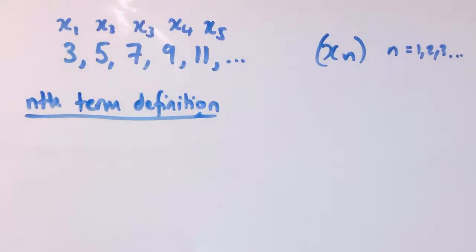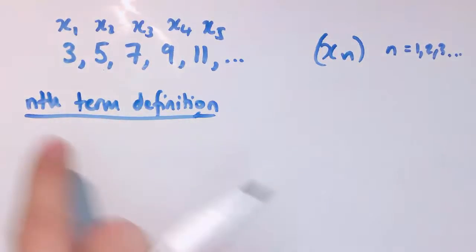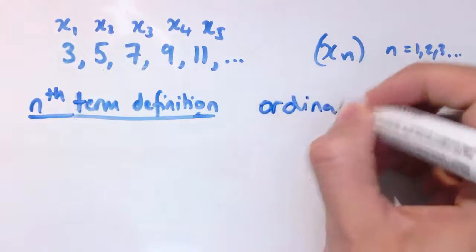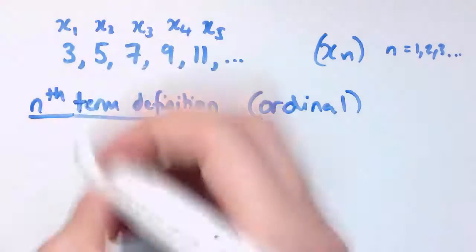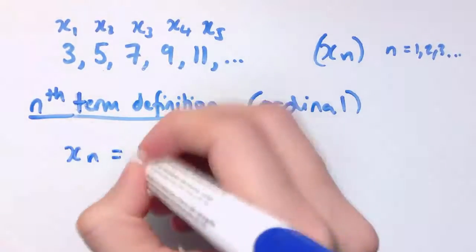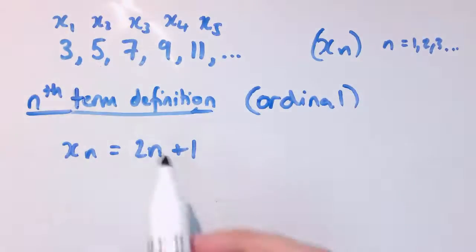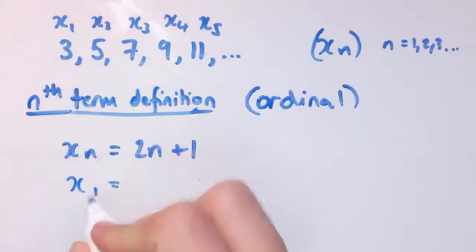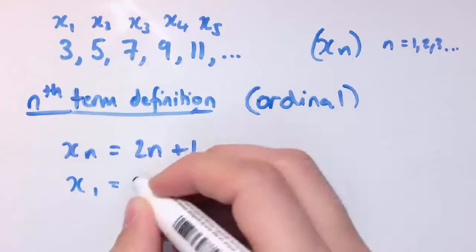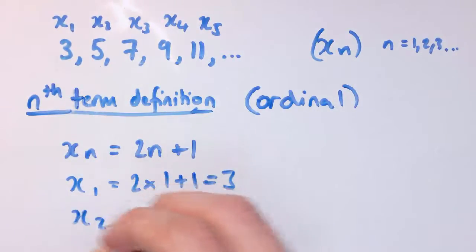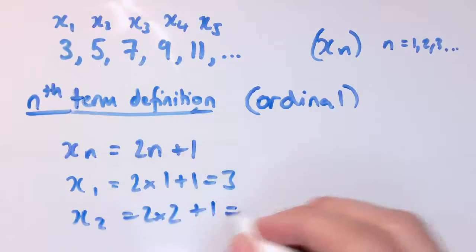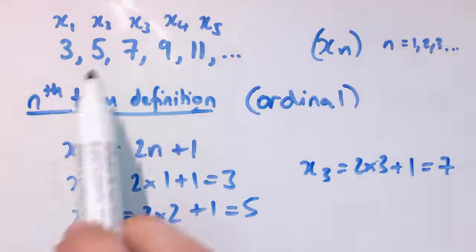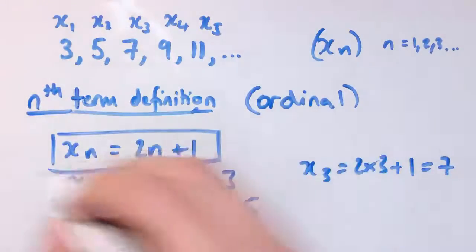There are two ways of describing this sequence. The first one is the nth term definition — sometimes also called an ordinal description of the sequence. The nth term definition for this sequence is xn equals 2n plus 1. This is a formula for getting all of the different values of this sequence. So x1: replacing n with 1, I get 2 times 1 plus 1, and that's 3. x2 would be 2 times 2 plus 1, and that gives us 5. x3 would be 2 times 3 plus 1, and that's 7. And we can see this is generating that sequence.